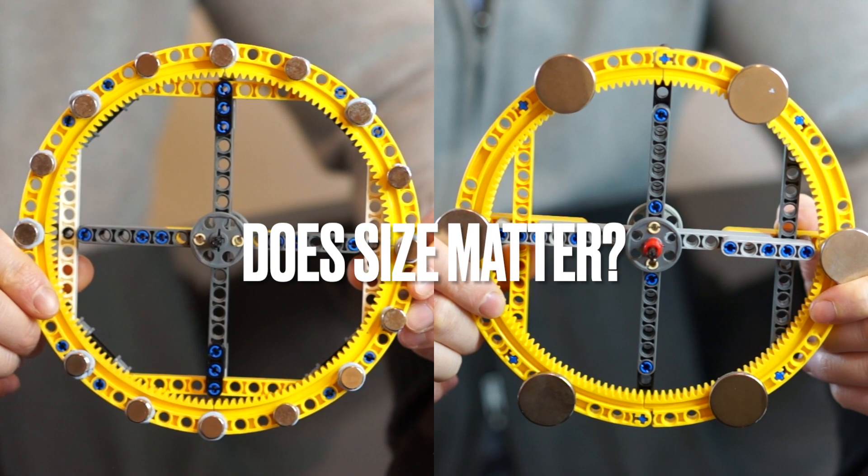So now that we know what effect distance has let's next look at how the size of the magnets affects the output.